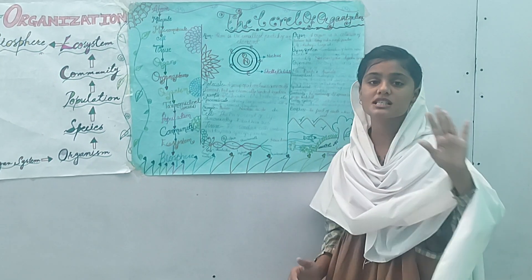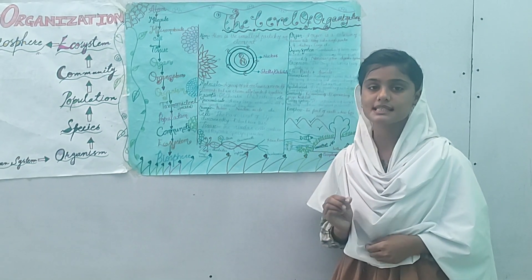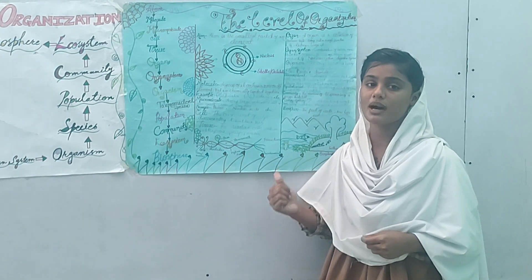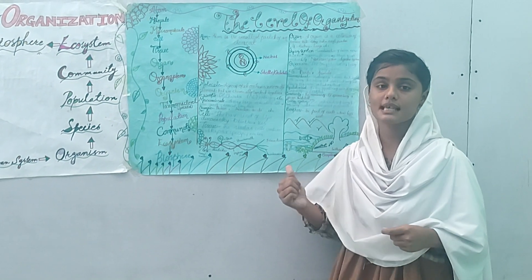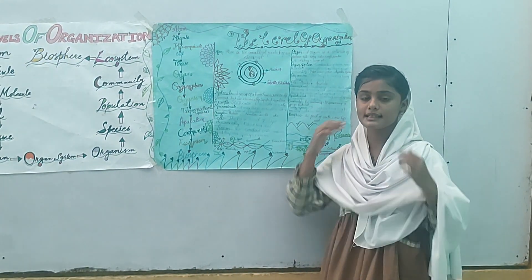Macromolecule: a very large molecule made up of very small structures is called a macromolecule. Examples include proteins, nucleic acids, etc.